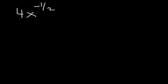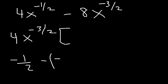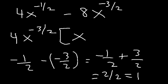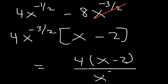What if we have negative fractional exponents? Consider 4x to the negative one-half minus 8x to the negative three-halves. We take out a 4 and the lower exponent, which is negative three-halves. Subtracting: negative 1/2 minus negative 3/2 equals negative 1/2 plus 3/2, which is 2/2 = 1, so the first term is simply x. For the last term, 8 divided by 4 is 2. The final answer is 4 times x minus 2, divided by x to the 3/2.